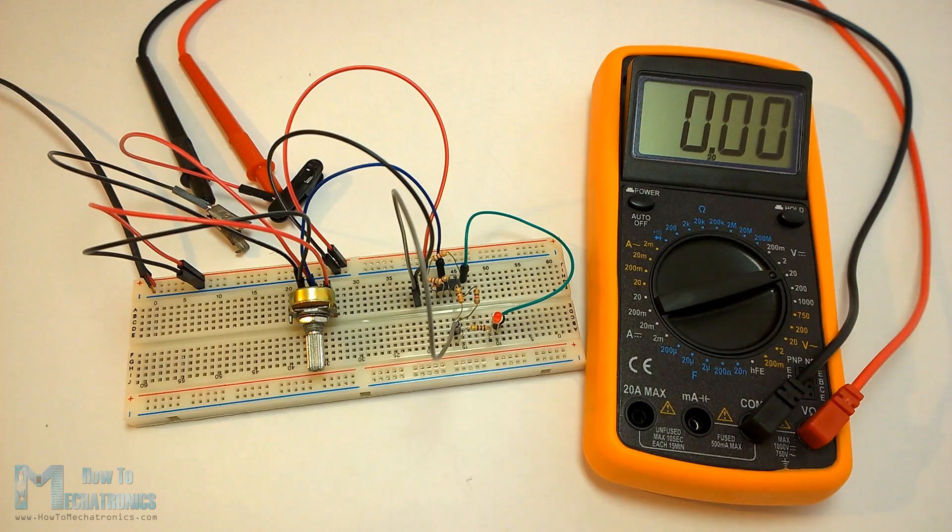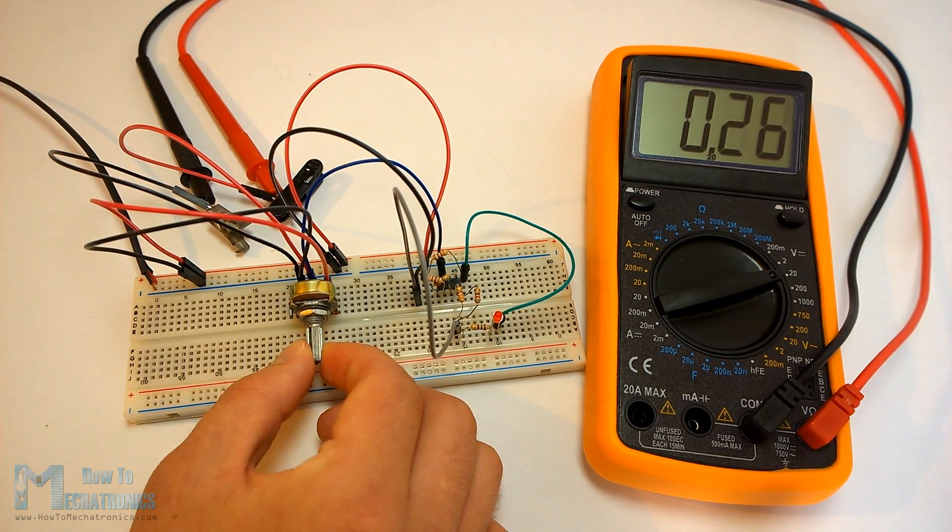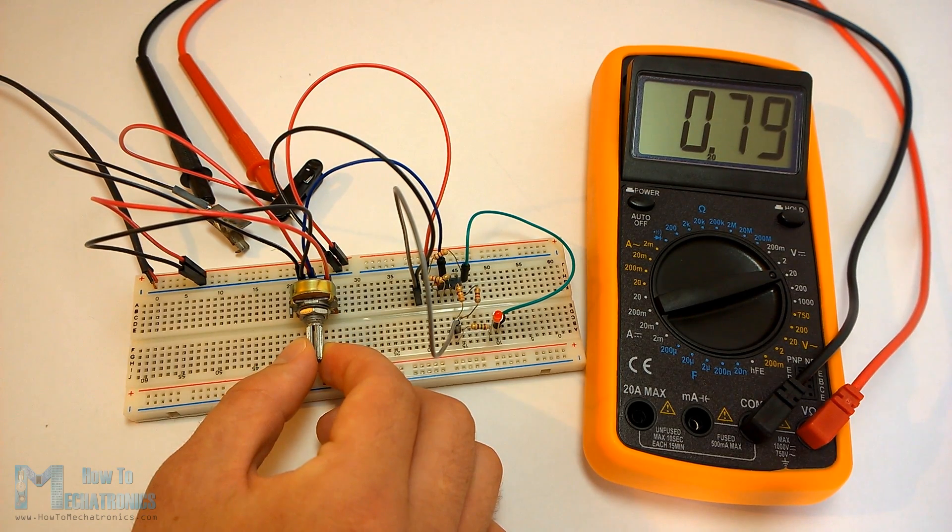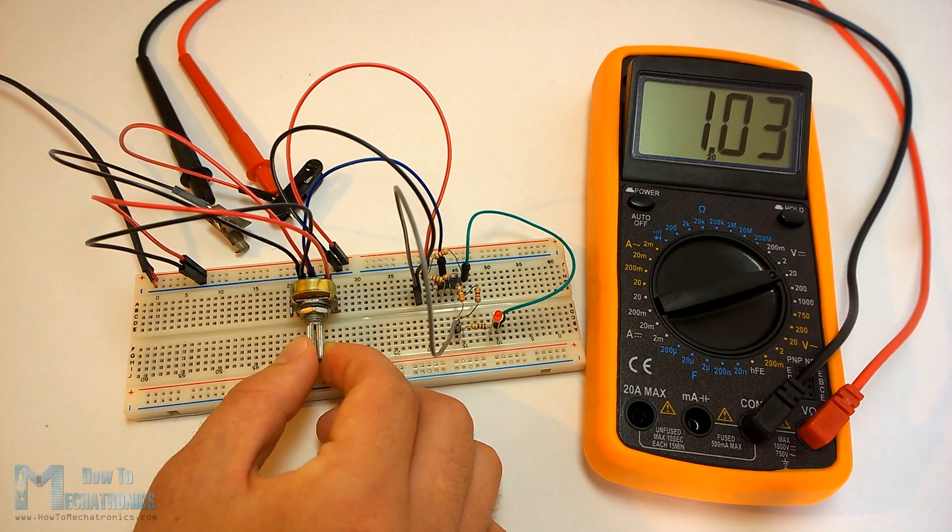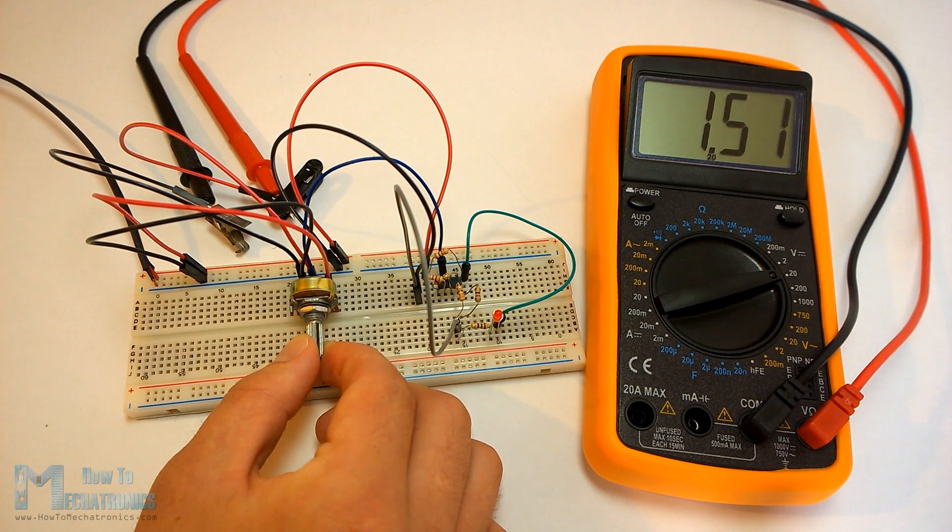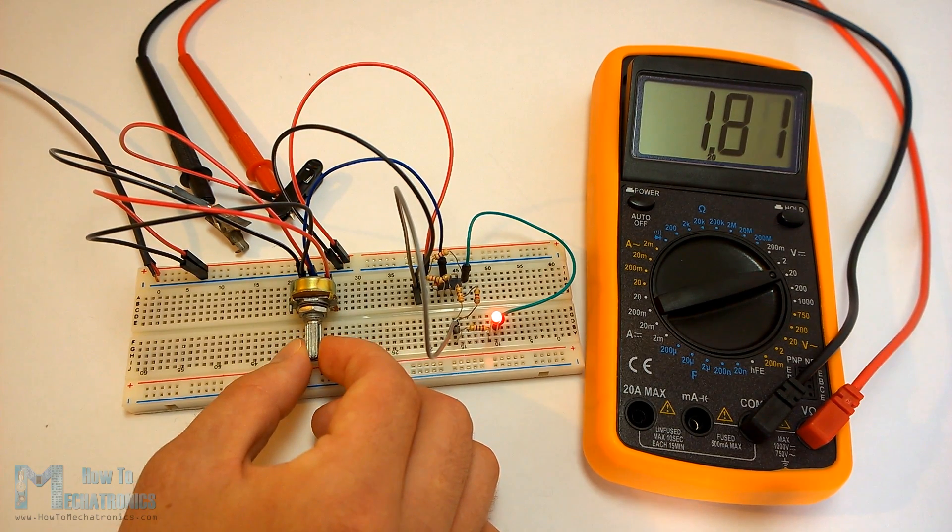Here's a demonstration of the Schmidt trigger circuit on a protoboard. The input voltage comes from the potentiometer and the output is connected to the LED. So as we increase the input voltage we can see that the LED will turn on at about 1.9 volts, or 1.8 volts in our case.